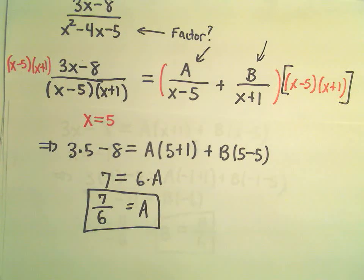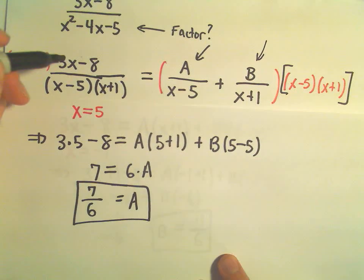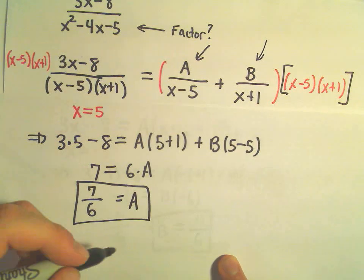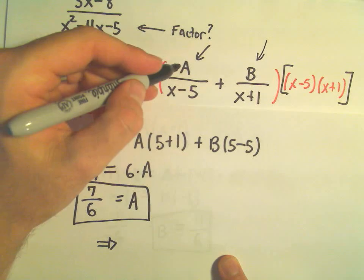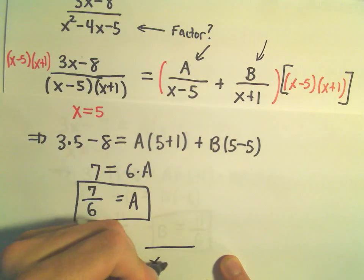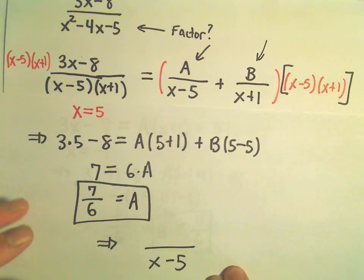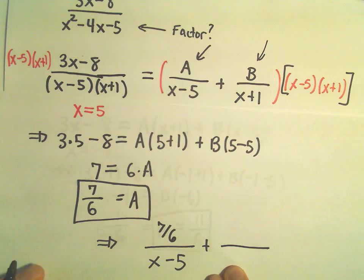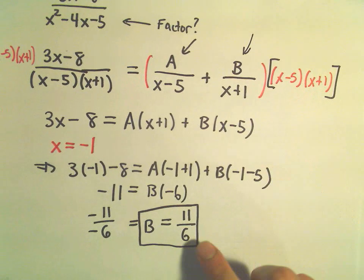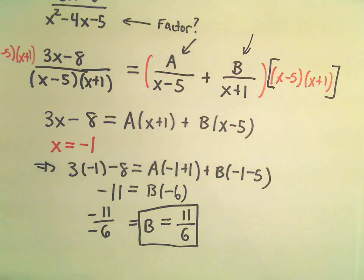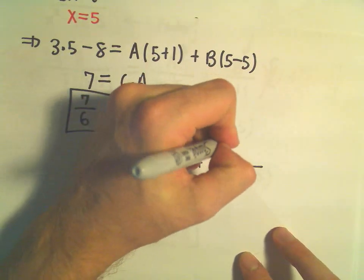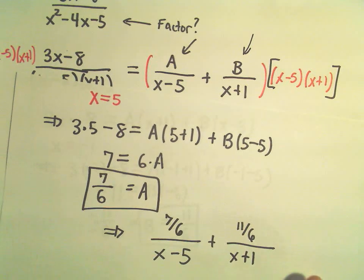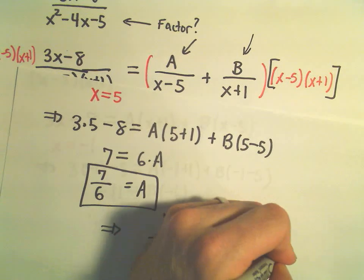So in conclusion, it says the partial fraction decomposition, if we break apart 3x minus 8 over x minus 5 times x plus 1, it says we're going to get A over x minus 5. Well, we just figured out A to be the value 7 sixths, plus B, and we figured out B a second ago. We said B was positive 11 over 6, and B had the denominator of x plus 1.